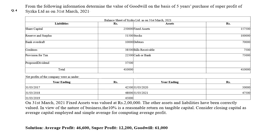The problem gives liability and asset side data: share capital, reserve and surplus, bank overdraft, creditors, provision for tax, proposed dividend on the liability side; and fixed assets, stock, debtors, bills receivable, cash and bank on the asset side. Net profit figures are given for years 2017 through 2021. On 31st March 2021, fixed assets were revalued at 2 lakh, whereas the book value was 1,57,500.